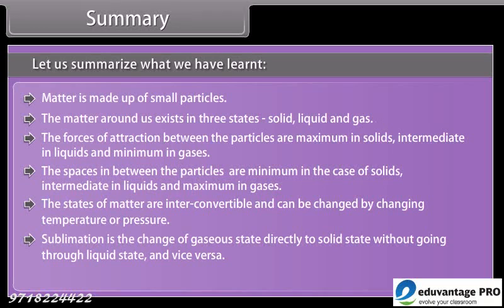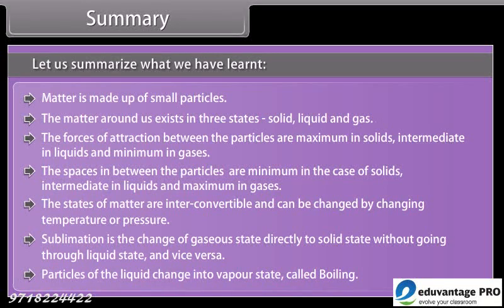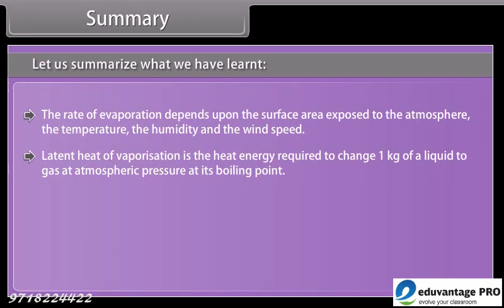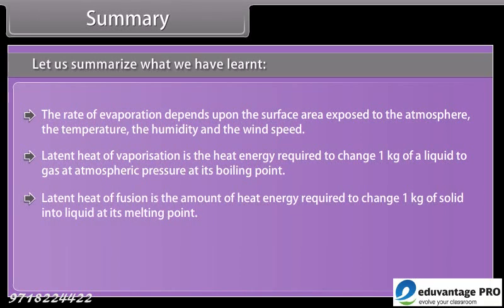Sublimation is the change of a gaseous state directly to solid state without going through liquid state, and vice versa. Particles of liquid change into vapor state — called boiling. The rate of evaporation depends upon the surface area exposed to the atmosphere, the temperature, the humidity and the wind speed. Latent heat of vaporization is the heat energy required to change one kilogram of a liquid to gas at atmospheric pressure at its boiling point. Latent heat of fusion is the amount of heat energy required to change one kilogram of solid into liquid at its melting point.